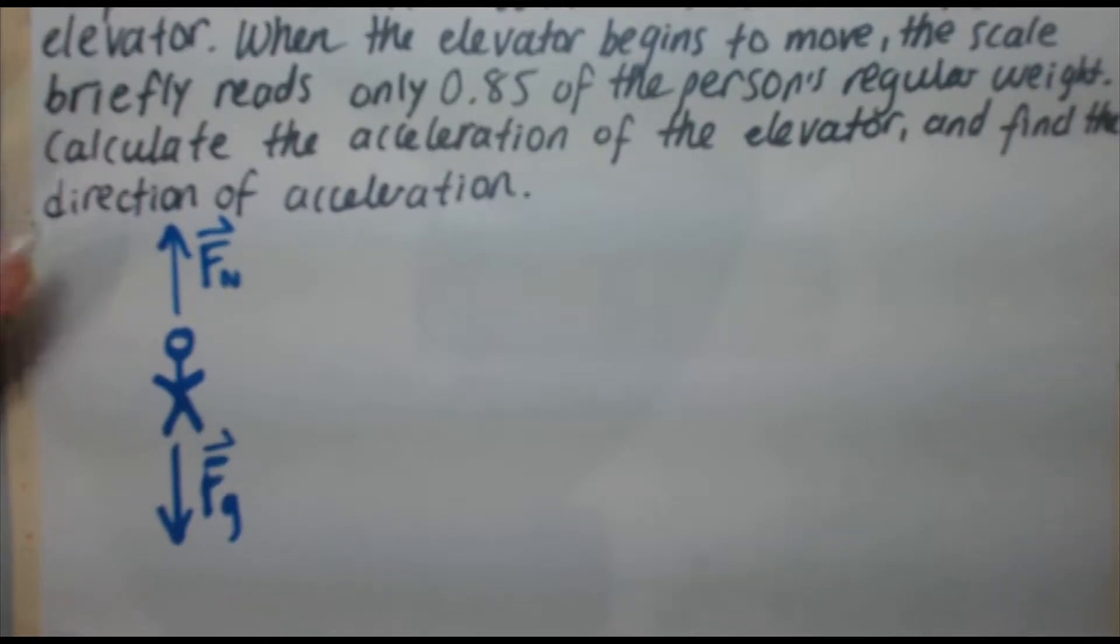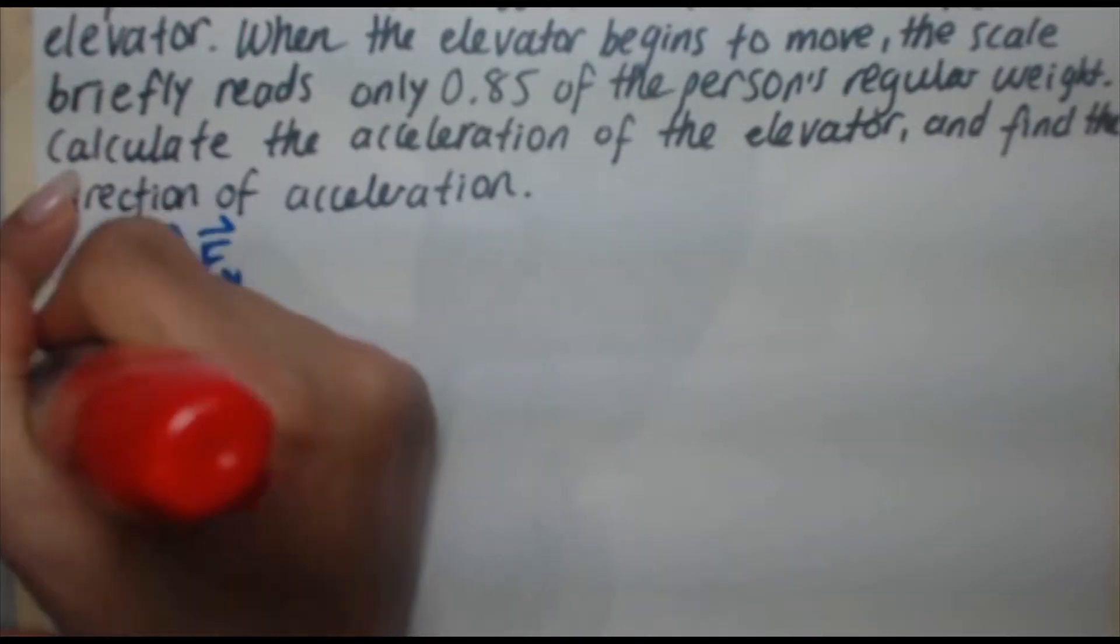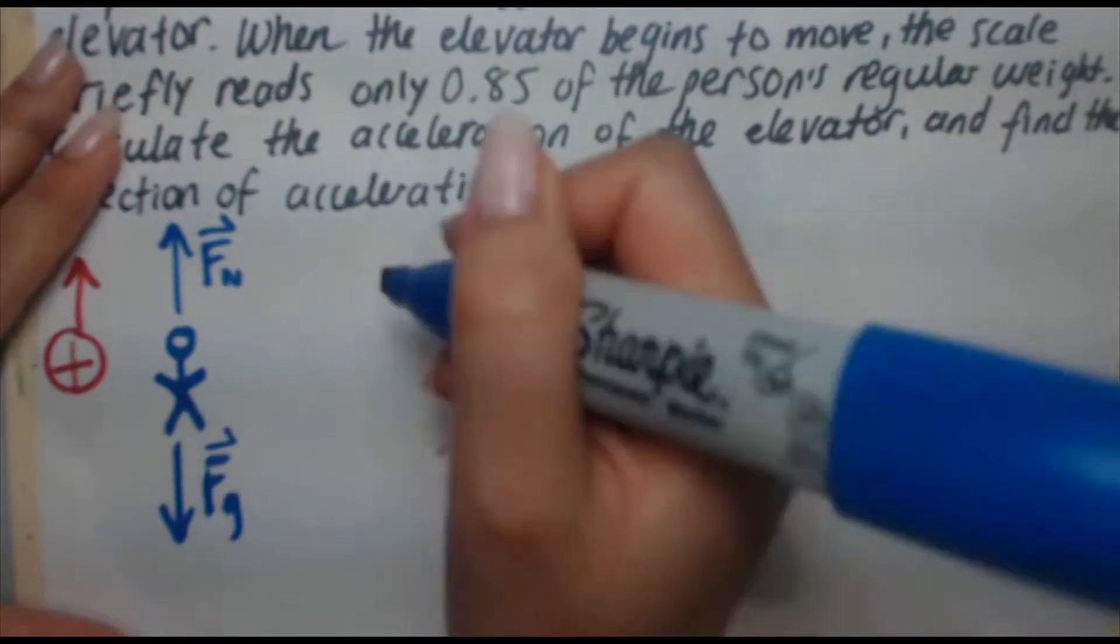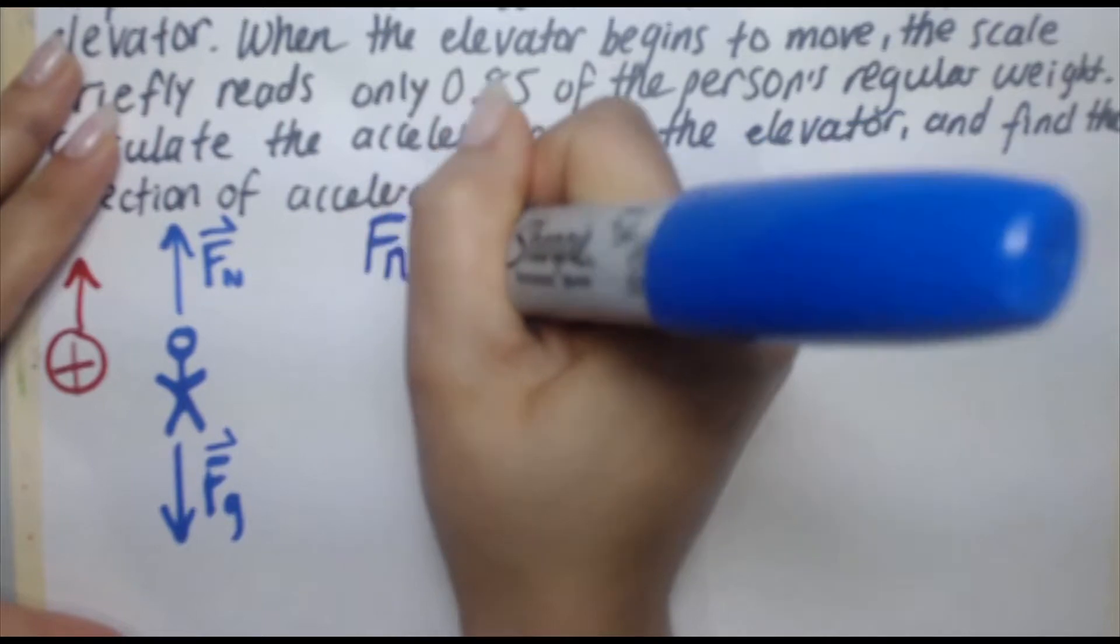Okay, so next we're going to assign our positive direction. We're going to let up be positive. We're only dealing with one dimension here, vertical. And now that we have our free body diagram, we jump into our F_net equals ma, Newton's second law.